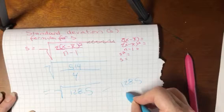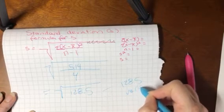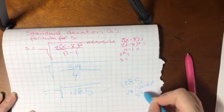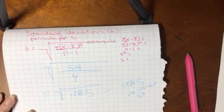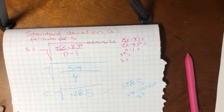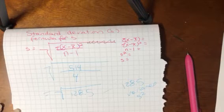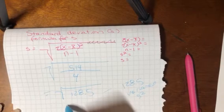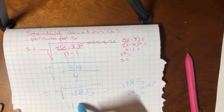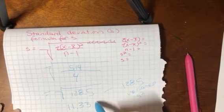But to get the standard deviation which is a more important calculation for what we're going to do in this semester, we're going to get the square root there and the square root there is 11.336.